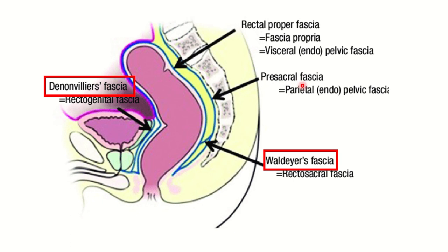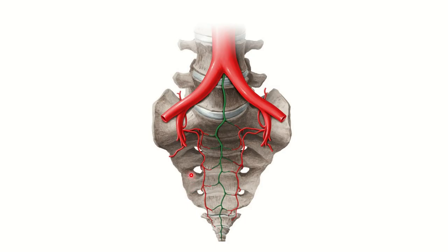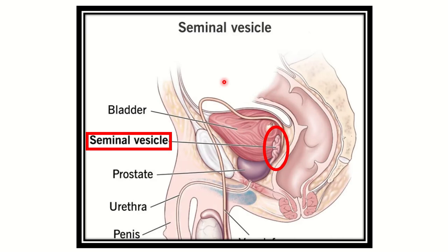We can also see other fascia such as the rectal perforated fascia and presacral fascia, which lie posteriorly to this region. Here we can see the median sacral artery — it lies in the posterior part of the rectum, while anteriorly there is the bladder. The median sacral artery is very close to the posterior bones and is posterior to the rectum.